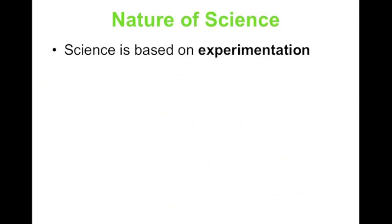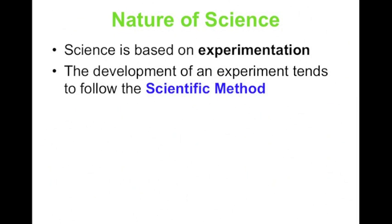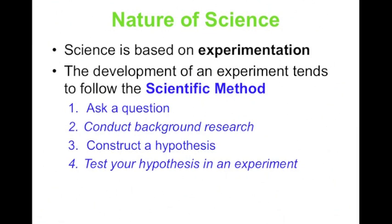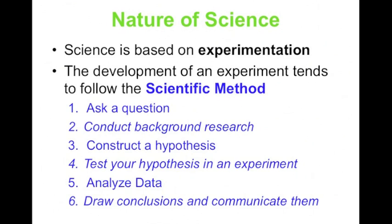Science is based on experimentation, and the development of an experiment tends to follow the scientific method. First, experimentation usually starts with asking some sort of question, inquiring about something that you want to know more about. Once you've asked a question, it's important to conduct some background research to see what other people have figured out about this topic. Then from there you can construct a hypothesis. You'll then test your hypothesis in an experiment, analyze the data that you get, and then draw conclusions and communicate them.